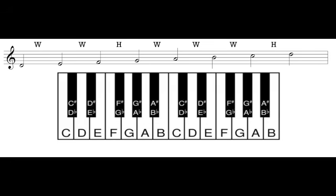Our next step is to write out the interval pattern for the major scale. Every scale has its own unique interval pattern that makes it what it is. The major scale's interval pattern, written between the notes, is: whole, whole, half, whole, whole, whole, half. This pattern defines what a major scale is, and so I'm going to need to add accidentals to my scale to make sure all the intervals are whole steps and half steps in the right places.